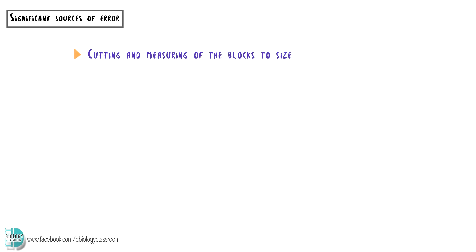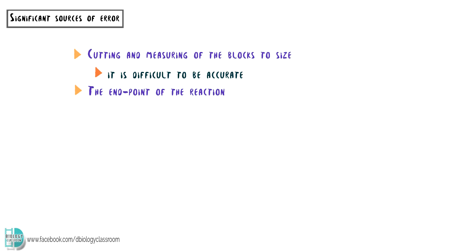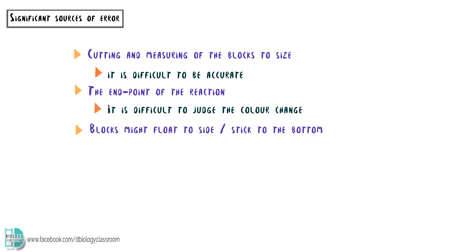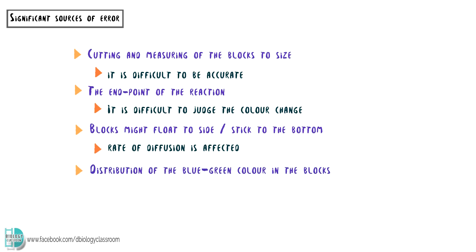There are a few significant sources of error in this investigation. Firstly, cutting and measuring of the blocks to size — since the blocks are small and soft, it is difficult to be accurate. Secondly, the end point of the reaction — it is difficult to judge the color change. Third, some of the blocks might float to the side while others stick to the bottom, which will affect the rate of diffusion. Lastly, the distribution of the blue-green color in the blocks may be uneven, making it difficult to standardize.